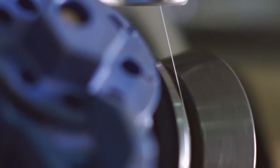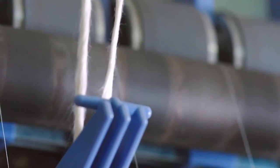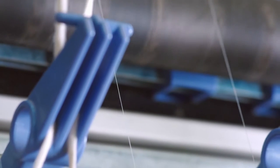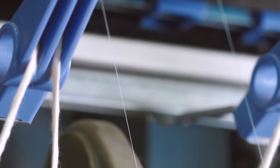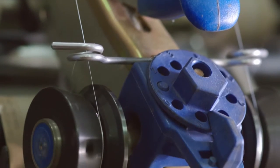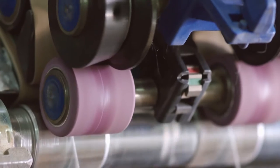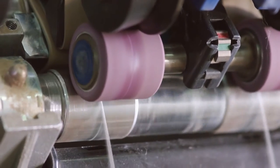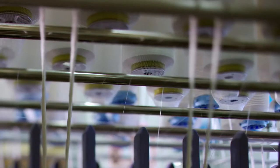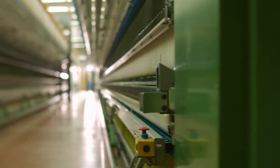Various types of yarn can be spun on a ring machine, like for instance, core spun yarn. With this method, an elastic thread is injected into the core of the cotton yarn. The yarns produced in this process are used for stretch or comfort denim.